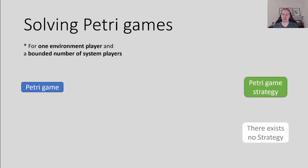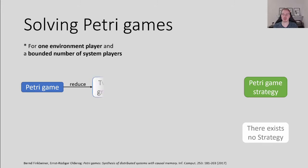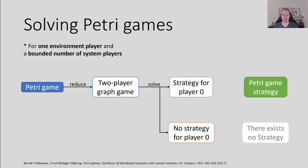In the case of one environment player and a bounded number of system players, the answer is as follows. We reduce the Petri game to a two-player game with complete information on a graph. This is computationally feasible and we can answer the question if player 0 has a winning strategy. In the positive case, we can compute it and translate it into a winning strategy for the system players in the Petri game. In the negative case, we know that the system players have no winning strategy.